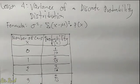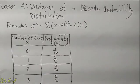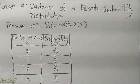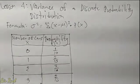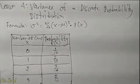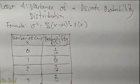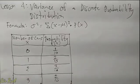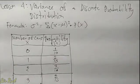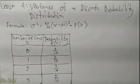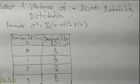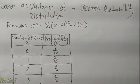Good day everyone. Our lesson for today is about the variance of a discrete probability distribution. Here's the formula: sigma squared equals the summation of x minus mean, squared, times p of x.